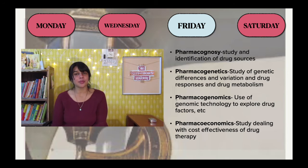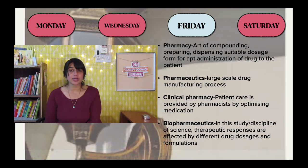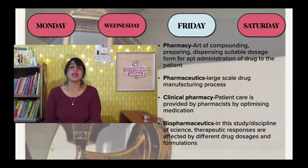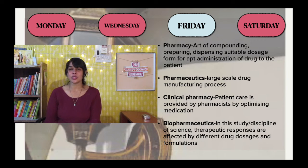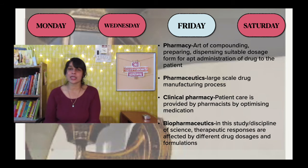Next, I talked about a practical branch — pharmacy, which is the art of compounding, preparation, and dispensing of drugs in the right dosage form for proper administration for the benefit of the patient. It also covers drug standardization, purity, quality control, and other aspects. Then I talked about pharmaceutics, related to large-scale drug manufacturing, and clinical pharmacy — the application of pharmacy clinically and therapeutically, studying what is happening on the clinical side.